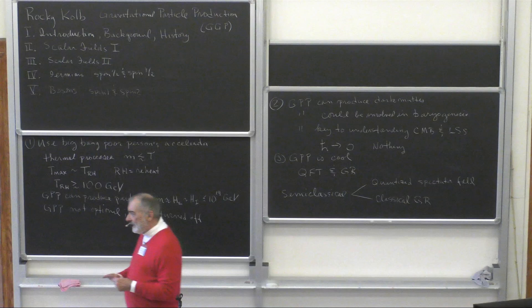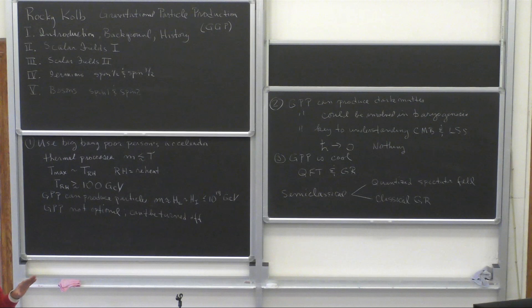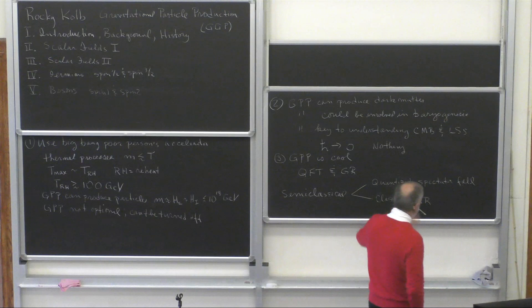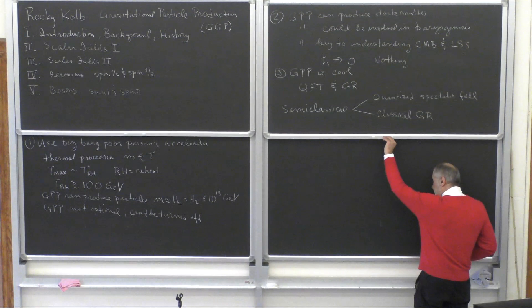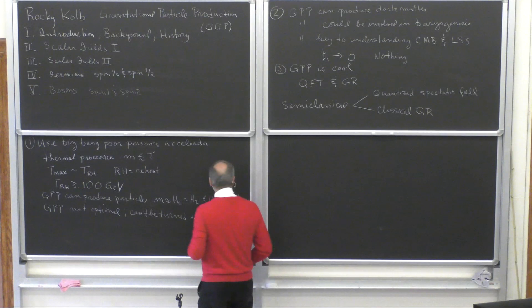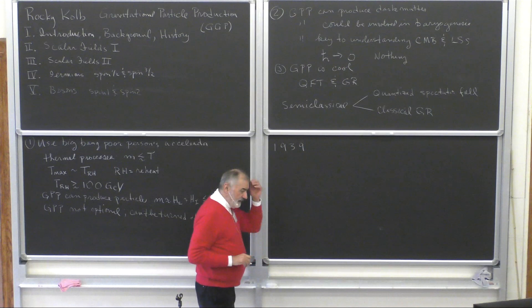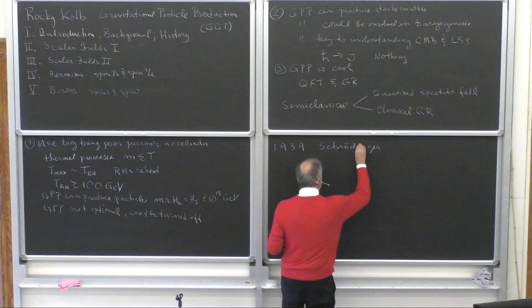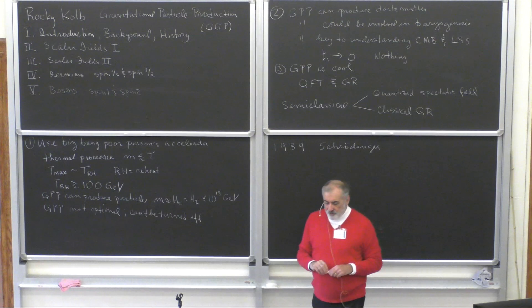Please ask questions at any time. I won't guarantee I will answer any questions, but feel free to ask. The history of gravitational particle production is an interesting one. It goes back to 1939, in a work by someone you've heard about — Schrödinger. Schrödinger in 1939 was the first person to realize that just the expansion of the universe creates particles.